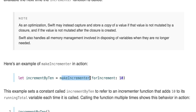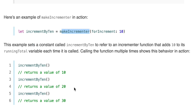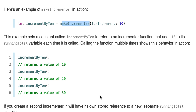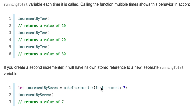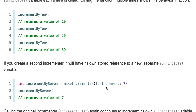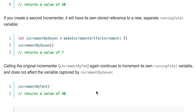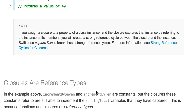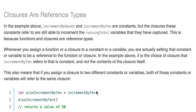Let incrementByTen = makeIncrementor(forIncrement: 10). Now you have an incrementByTen you can keep calling, and it will keep incrementing by 10 using the runningTotal and amount. If you create a second incrementor, it will have its own reference. So you can create incrementBySeven = makeIncrementor(forIncrement: 7). If you use the original one you'll still get 40, because it preserves its environment and state. Closures are basically a way to preserve state, and multiple states can be kept for each instance of the closure.